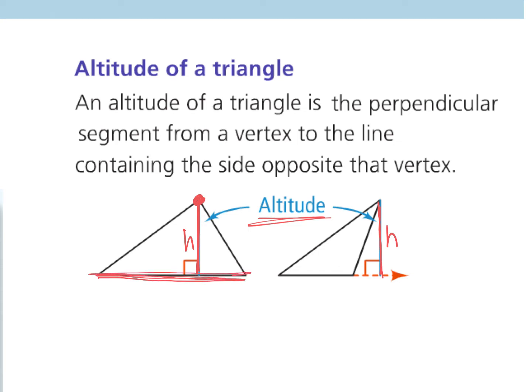So it's going to make a 90-degree angle with that opposite side. And so that's also what we get over here. When you take a look, I've got this vertex here. And if I extend out this bottom side, I see that my altitude is perpendicular to that bottom side of the triangle. So that's my altitude.